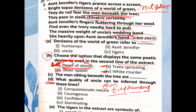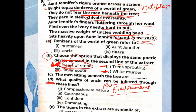Part D: What quality of uncle can be inferred through these lines — compassionate, courageous, confident, or dominating? Uncle was dominating, which is why Aunt Jennifer felt unhappy and burdened by the massive weight of this marriage. So option four — dominating — is correct.